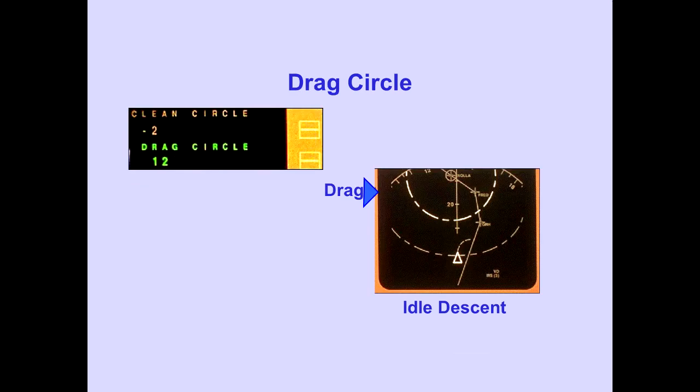The drag circle line displays the distance from current position to the drag energy management circle. Prior to passing the drag circle line, an idle descent with speed brakes can be made to attain the altitude associated with the descent-to waypoint. The drag circle is only displayed when the airplane is within the clean circle. In this example, the airplane is 12 miles from the drag line.